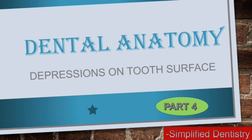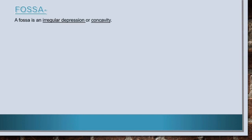Let's know about each one of them in detail. First, let's know about fossa. A fossa is an irregular depression or concavity found in both anterior and posterior teeth. There are different types of fossa, so let's know about each one of them one by one.